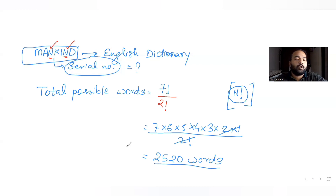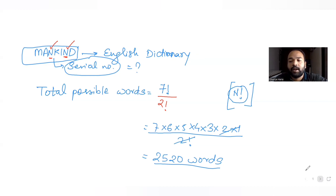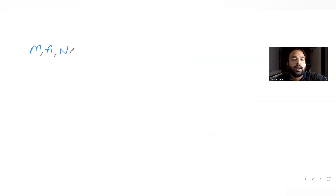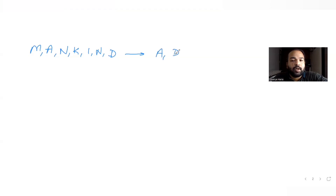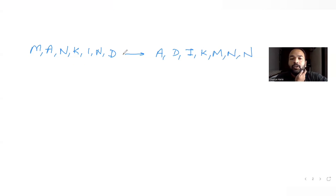So there are 2520 words that can be formed with the letters of MANKIND. Now let's find the serial number of this word. First, let's write the letters in ascending order as per the English dictionary: A, D, I, K, M, M, N.